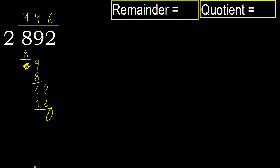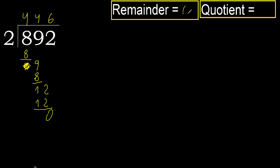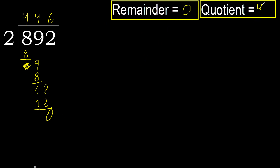There is no remaining number, therefore we finish. The result is 0, therefore 892 divided by 2 is 446.